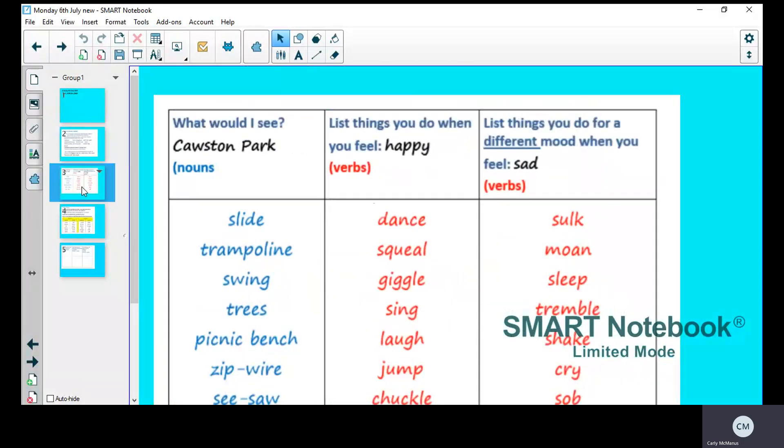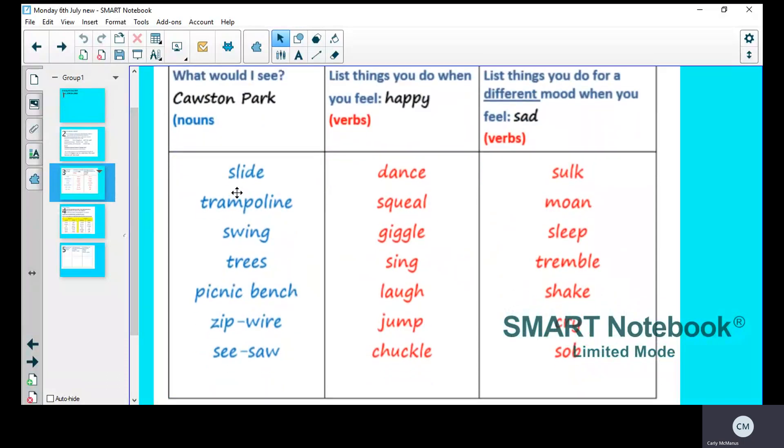So to create moods we're just going to look at a few things. What I did was think about seven or eight things that I might find in the park. So here they are, the nouns: the slide, the trampoline, swing, trees, picnic bench, the zip-wire and a seesaw.